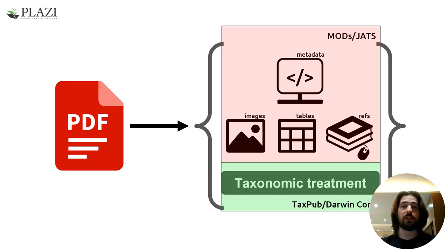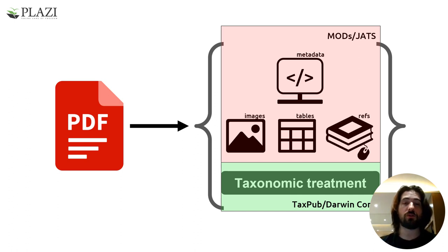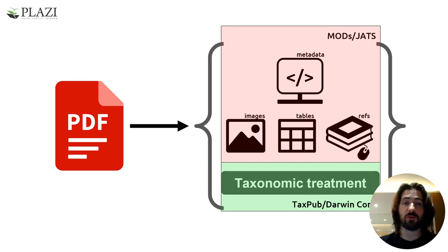So, how do we get an actual digitized treatment? The standard procedure to extract a taxonomic treatment is from a scientific publication stored as PDF, converting it to a machine-readable format, from where we can also extract an article's metadata, images, tables, and references, and then convert them all following FAIR principles.